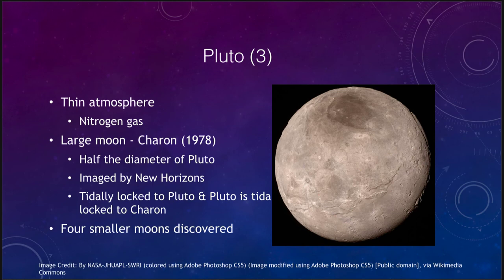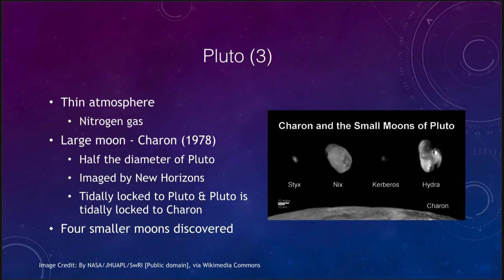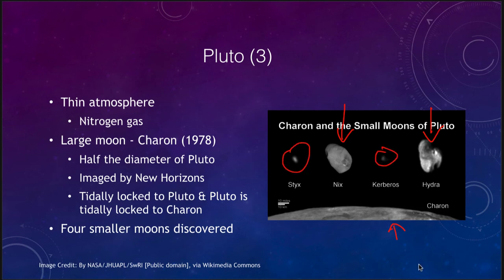There are also other moons of Pluto in addition to Charon, which was discovered in 1978. These were imaged to various extents by New Horizons as it flew by. Nix and Hydra were imaged in relatively decent detail, and we can see their structures and craters. Styx and Kerberos were imaged but without much detail. Charon is shown for scale at the bottom of the image.